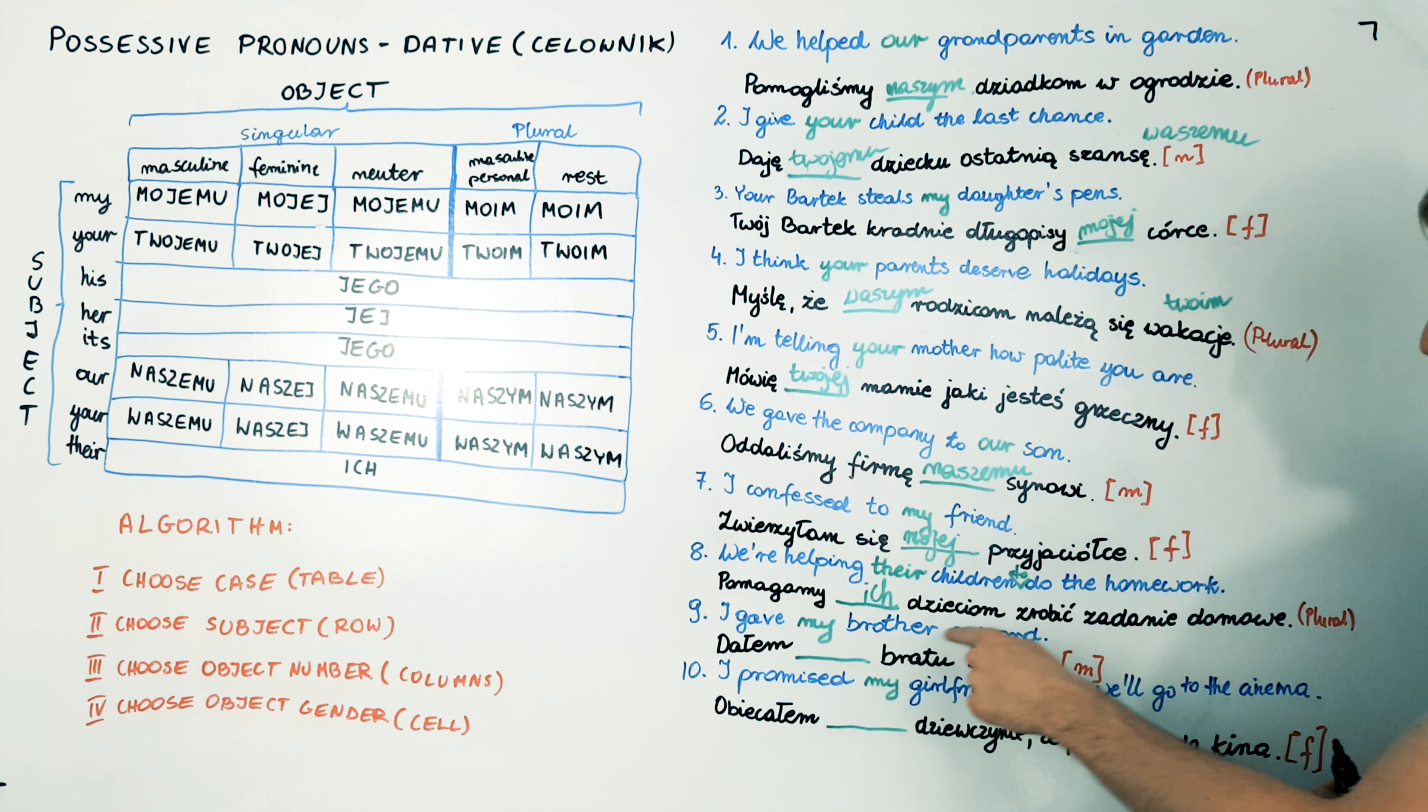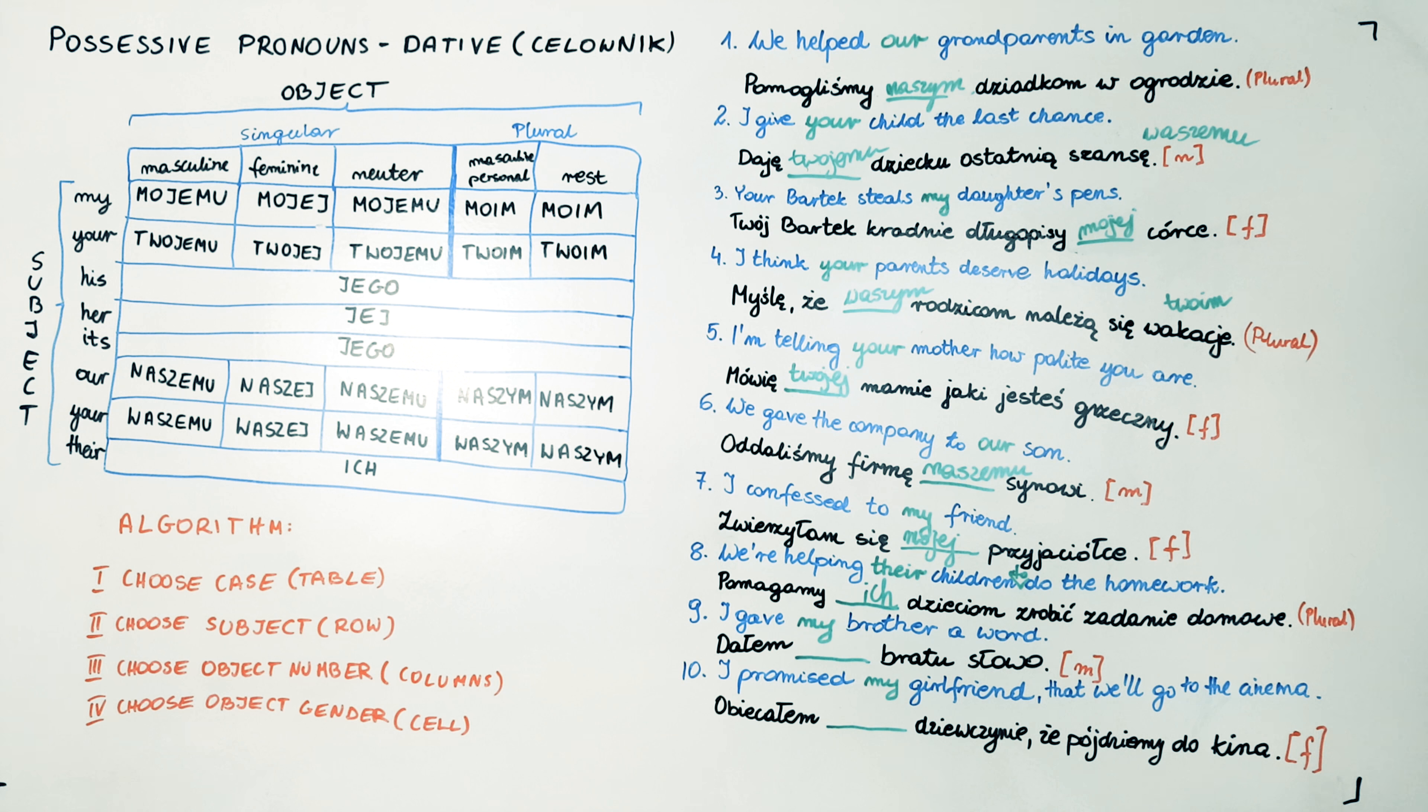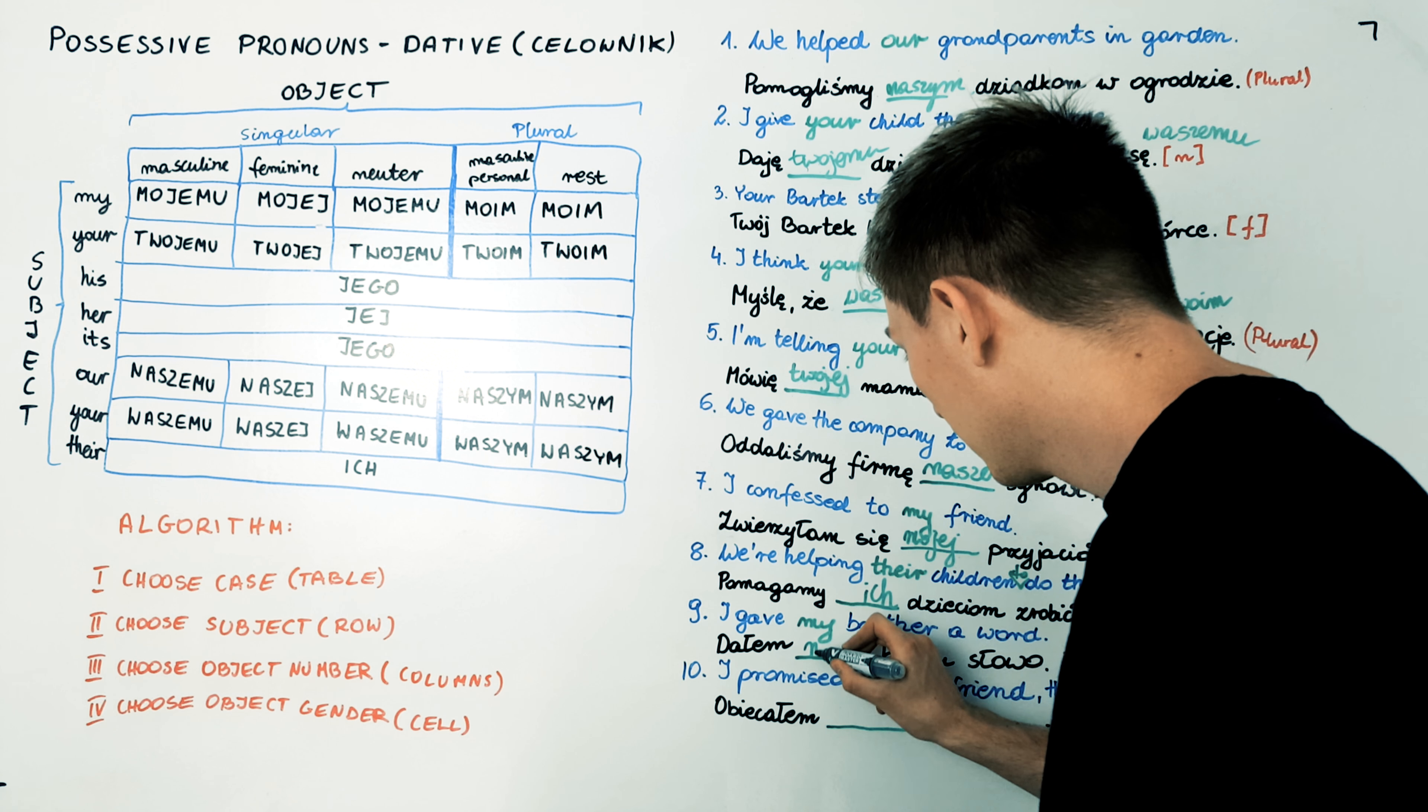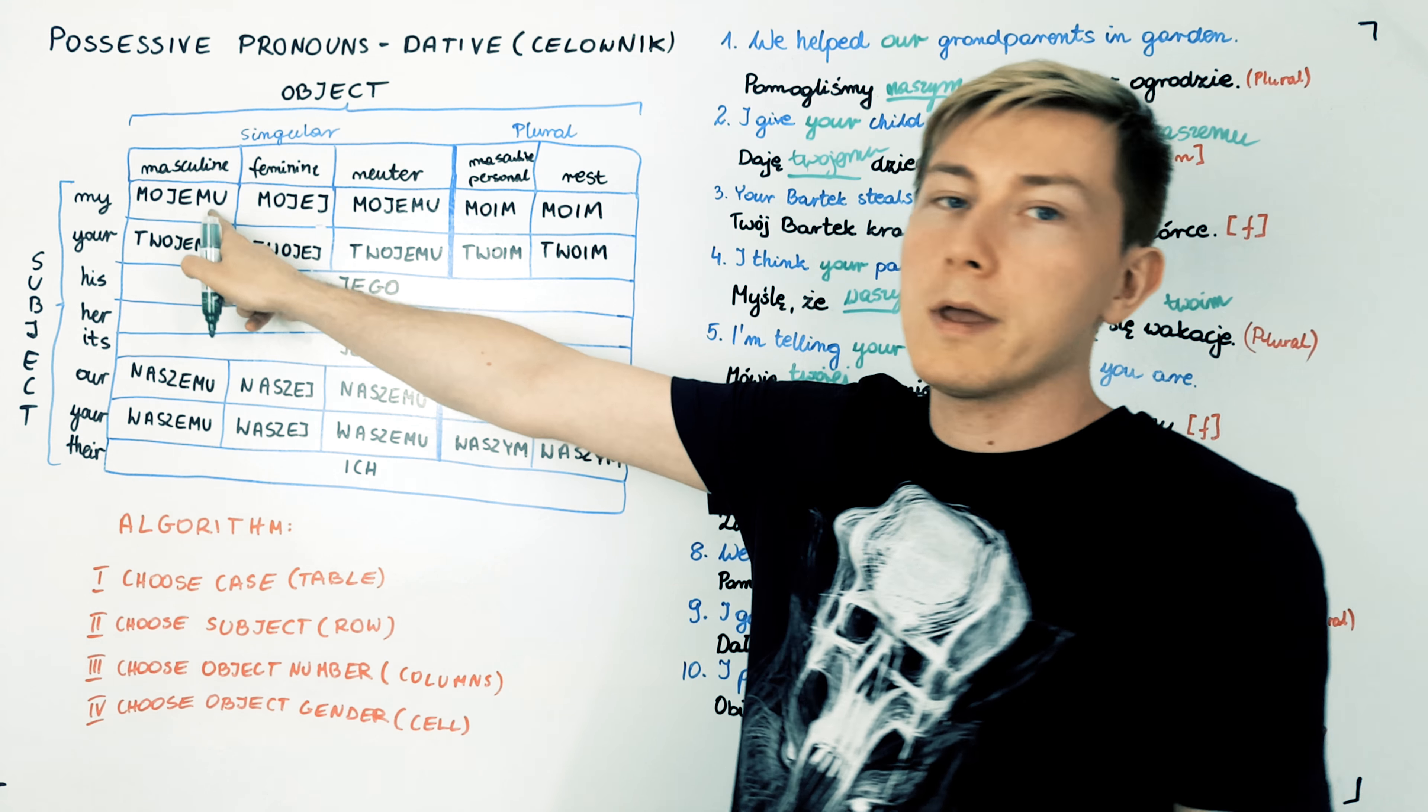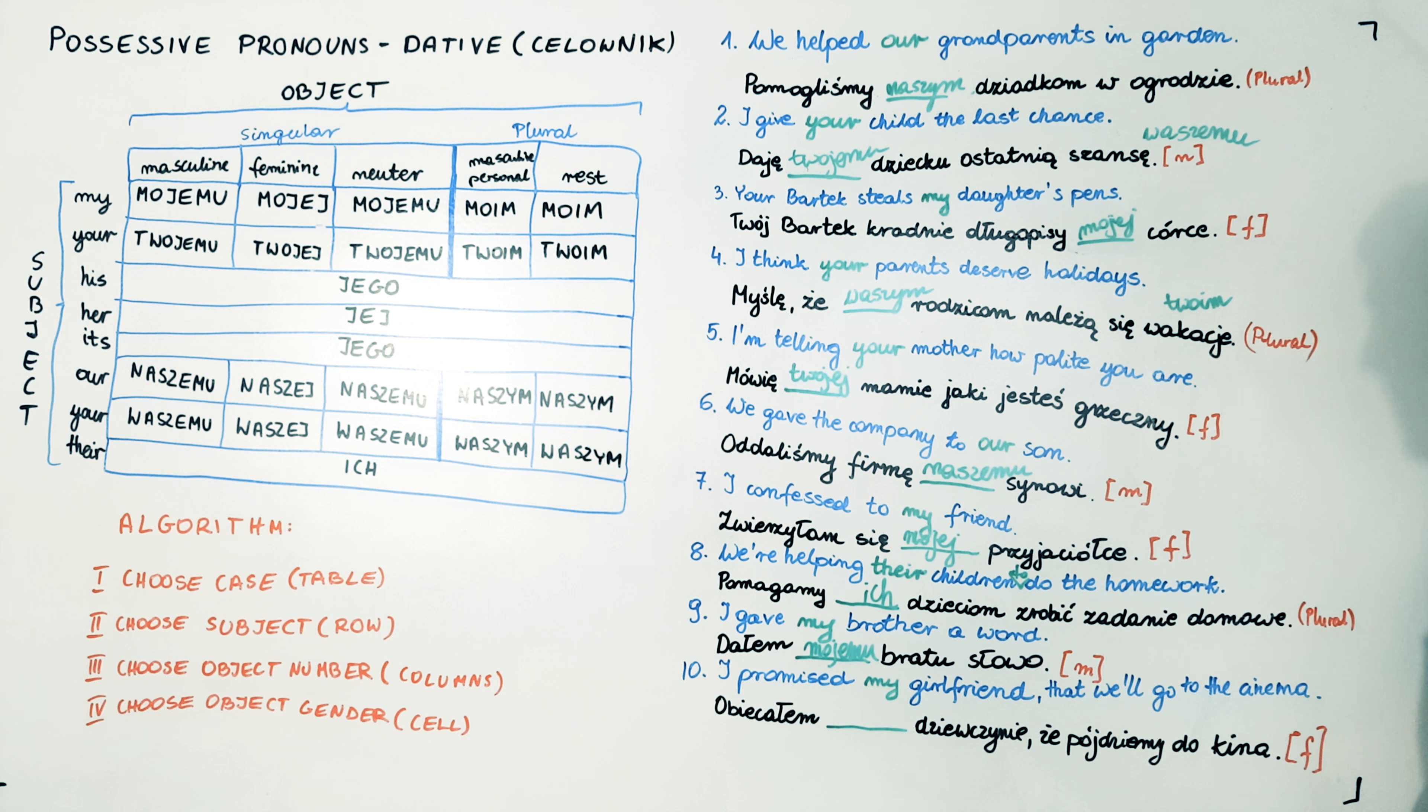I gave my brother a word. Dałem mojemu bratu słowo. Mojemu. This one. Mojemu. And try the last example.